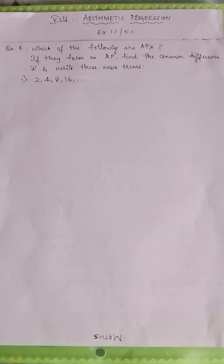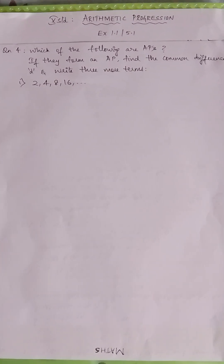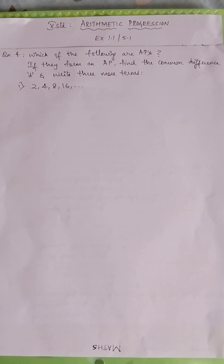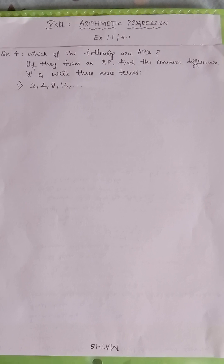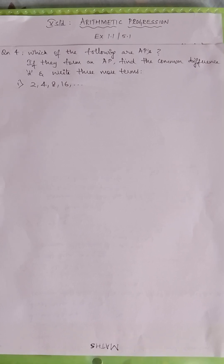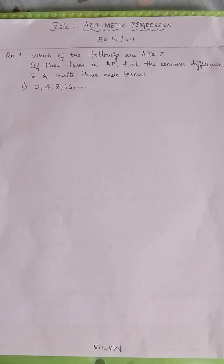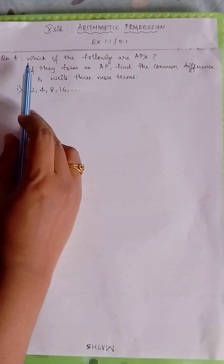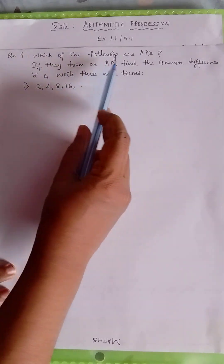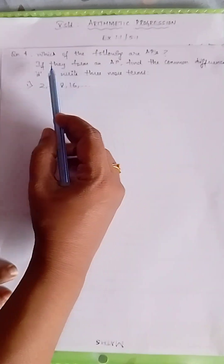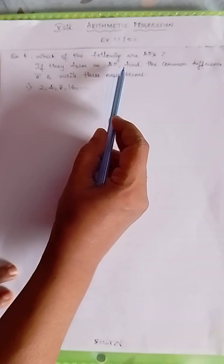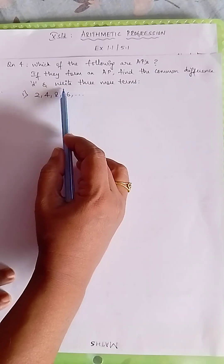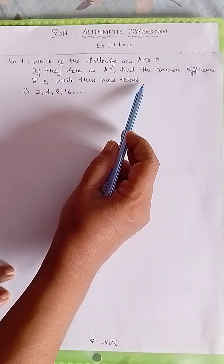Hello everyone, children. We have already done arithmetic progression, first exercise 3 mains. We are now going to learn the 4th main. The 4th main says: which of the following are AP? If they form an AP, find the common difference and write 3 more terms.